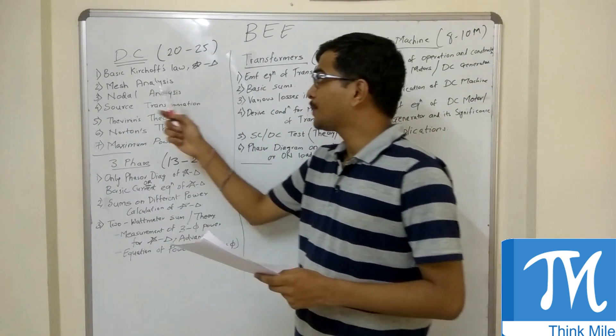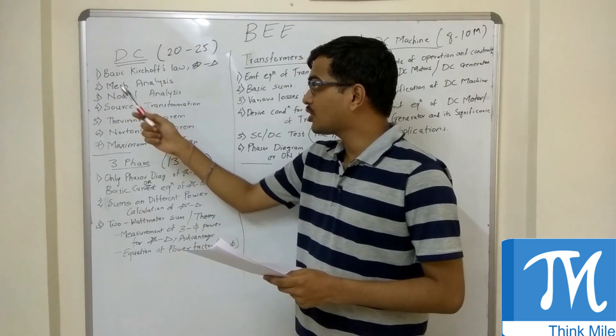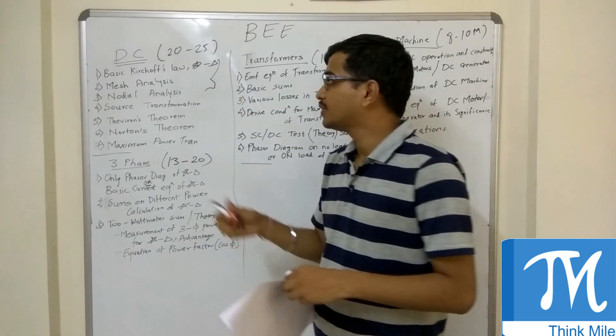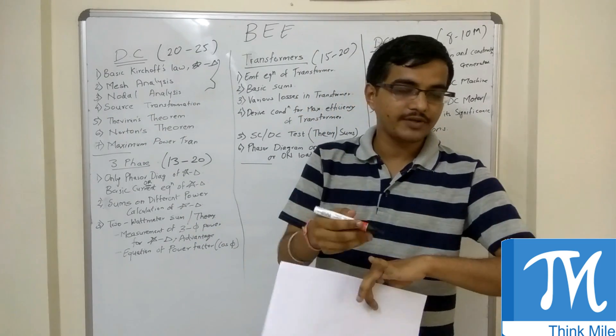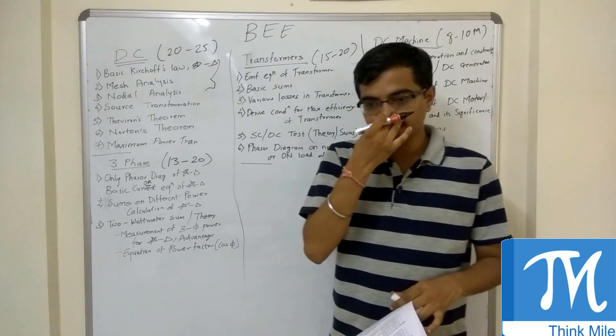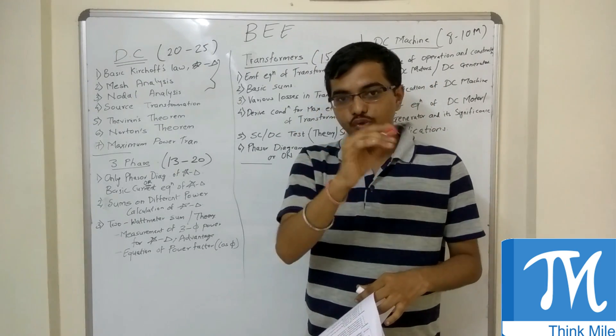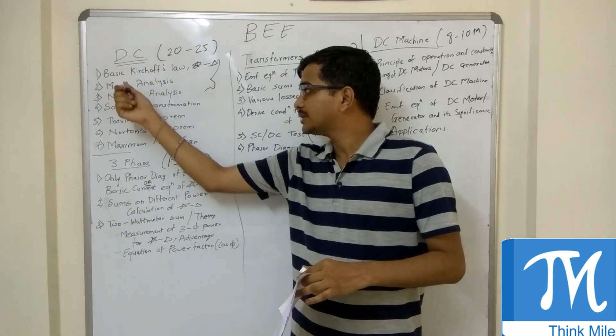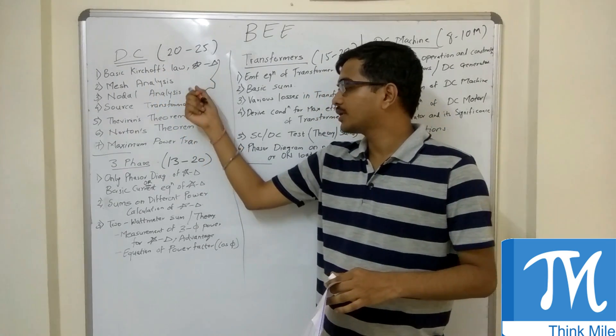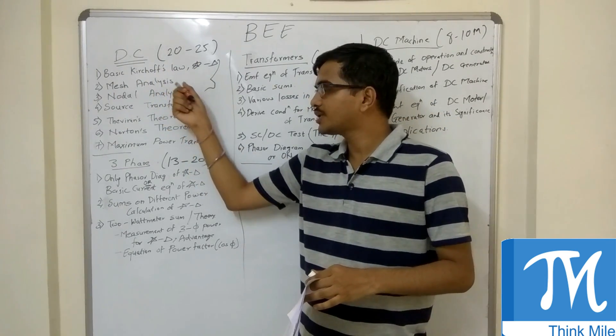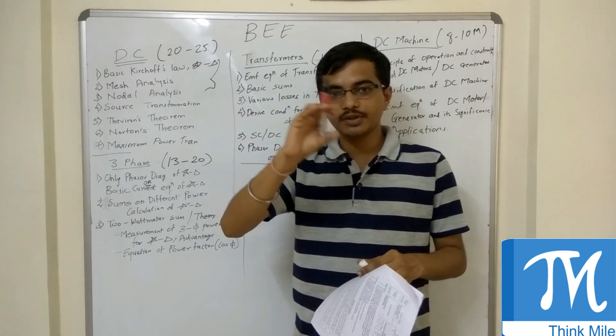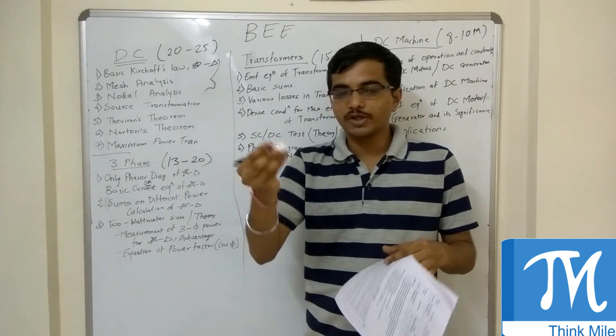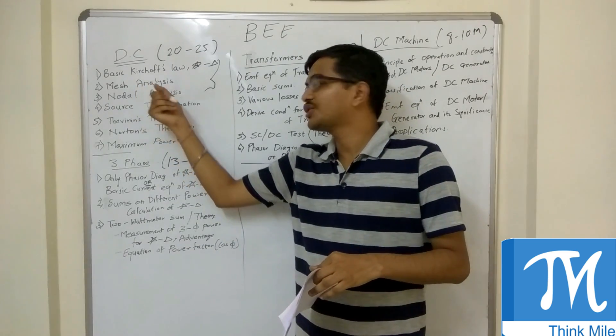In BEE, for DC, there are few topics: first is basic Kirchhoff's laws, mesh analysis and nodal analysis. These three are basics for all these topics. Generally a question is seen on these topics. You will be given a circuit and you will be told to find the current across one of the resistors using mesh analysis or nodal analysis.